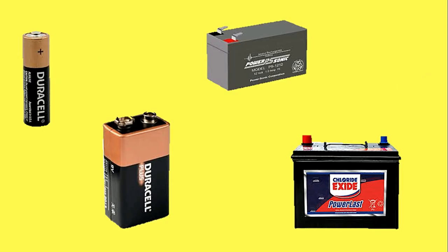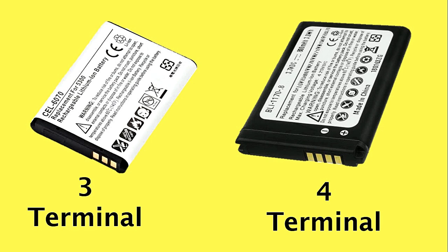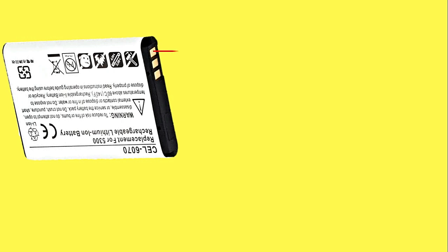You must have seen various types of batteries — in all types of batteries there are only two terminals: one is positive and one is negative. But the battery of a mobile phone has three or four terminals. Have you ever thought why? Today through this video I am going to tell you why there are three or four terminals in phone batteries.